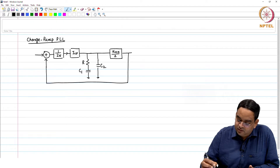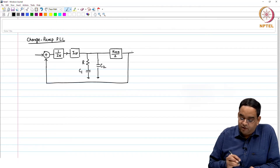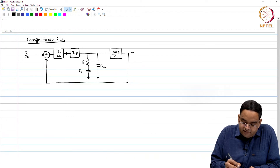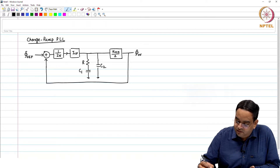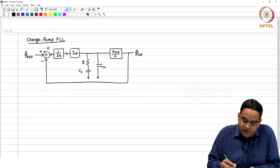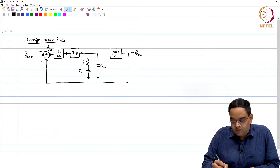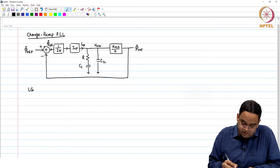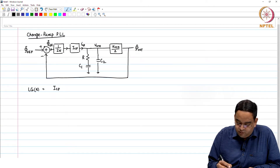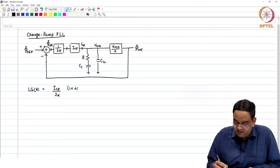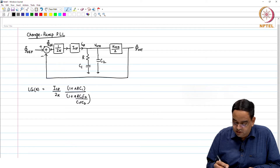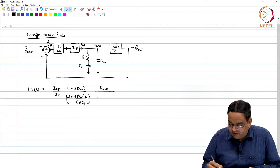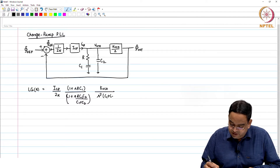This is the small signal block diagram of the PLL. Here you have the input or the reference phase, and this is your output phase. The phase error can be seen here as phi_error. The output of the charge pump is ICP and this node voltage is V_control. The loop gain of this PLL has been ICP over 2π, into (1 + s·R·C1) divided by (1 + s·R·C1·C2/(C1+C2)) times kVCO over s² into (C1 + C2).